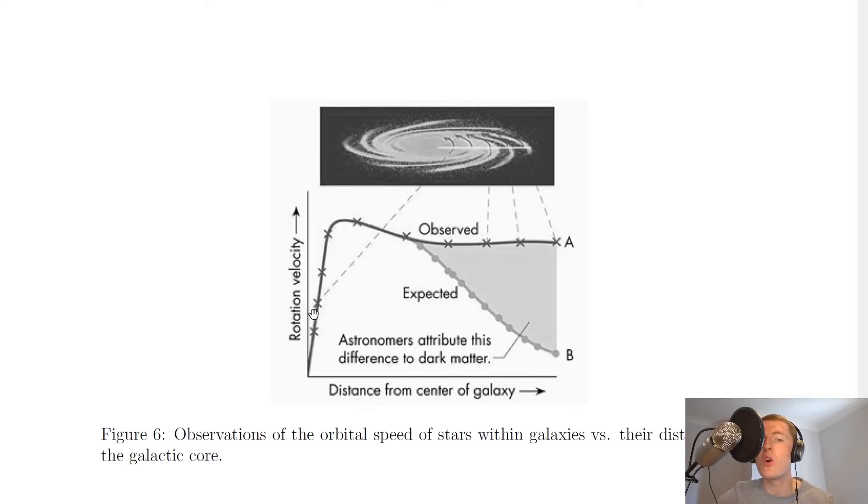So close to the centre we see a sort of linear increase in the rotational velocity of the stars up until a point here where they're then at their maximum rotational velocity.